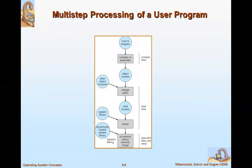The diagram shows how a process undergoes multiple steps. Your source code is compiled at compile time to generate an object module, which is then linked by the linkage editor. The loader brings it into memory at load time, and then execution time begins. At all three stages — compile time, load time, and execution time — addresses are bound. This is the multi-step processing of a user program.